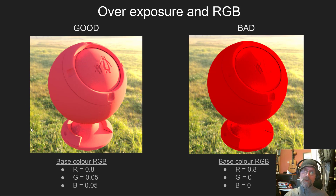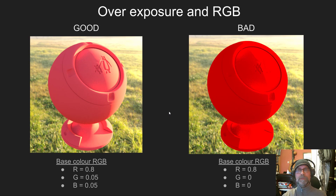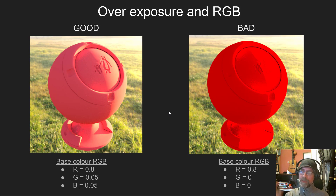The way things overexpose in CG isn't quite like real life. On the left we have proper exposure — as we pump up the light hitting our object, it goes more and more white. But on the right we have bad exposure — no matter how much light we throw at that surface, it will never go white. It will never clamp or overexpose correctly. Left is good, right is bad.